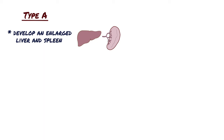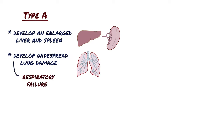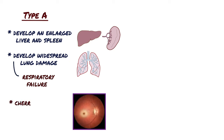Children with Niemann-Pick disease type A also develop widespread lung damage that can cause recurrent lung infections and eventually lead to respiratory failure. All affected children have an eye abnormality called the cherry red spot, which can be identified with an eye examination. Children with Niemann-Pick disease type A generally do not survive past early childhood.